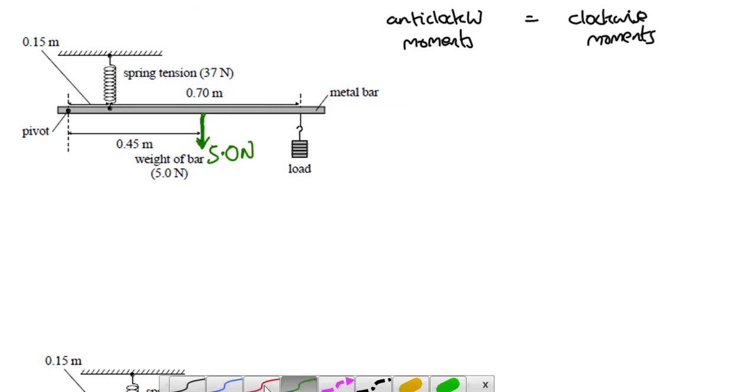We've got this unknown load here. We don't know how big this is. Draw the arrow there. We'll call that W. We don't know what that is. But, and then we also have the spring, which is the tension of the spring. So, that's acting upwards. And it's a big, big force. That is 37 newtons acting upwards. Don't forget, that's the pivot. So, we need to know distances from that pivot.